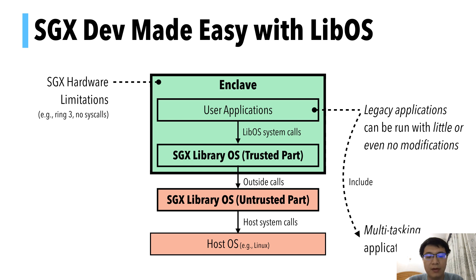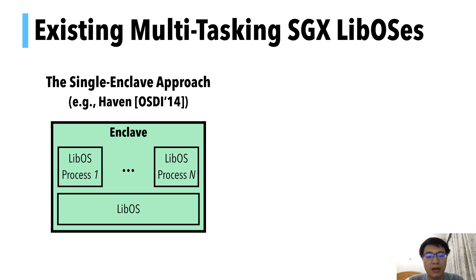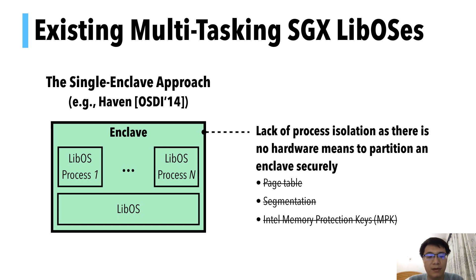This includes legacy applications that use multi-processes. Multitasking is undoubtedly an important feature for SGX's LibOS. Existing LibOS have used two different approaches. The first is the single-enclave approach, which runs all LibOS processes inside a single SGX enclave. The problem with this approach is the lack of process isolation, which seems unavoidable as there are no hardware means on x86 CPUs to securely partition enclaves into smaller security domains.